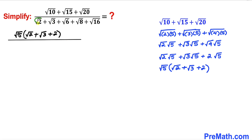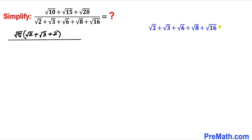Now let's focus on the denominator. I have copied it down and we are going to manipulate it as well. The 6 under the radical can be broken down to 2 times 3, the 8 to 2 times 4, and we know that √16 is simply 4.